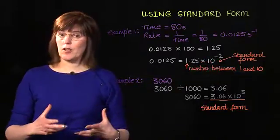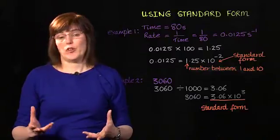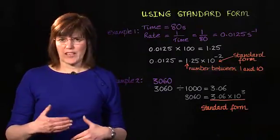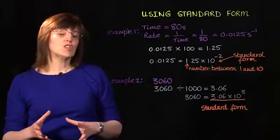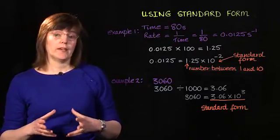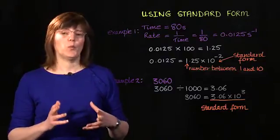But we might have a large number, for example, the number of bacteria in a colony or the age of a fossil in years. To convert a large number into standard form, again we need a number between 1 and 10.